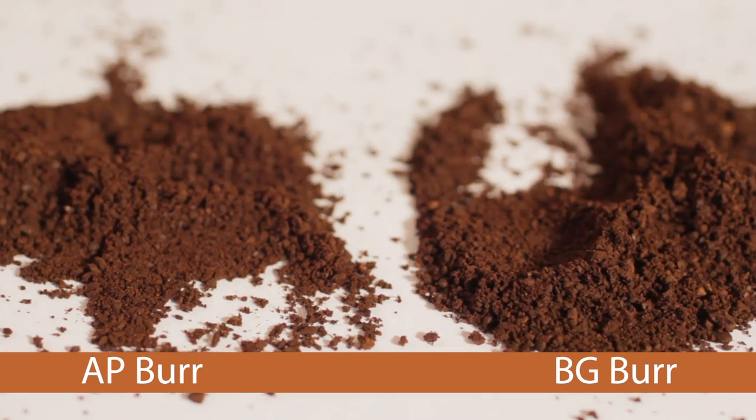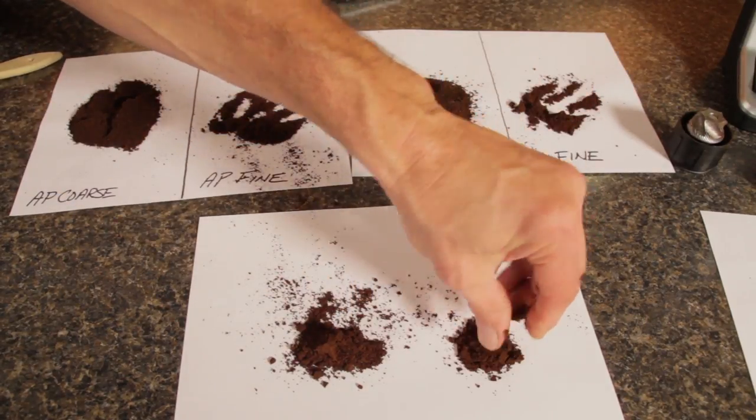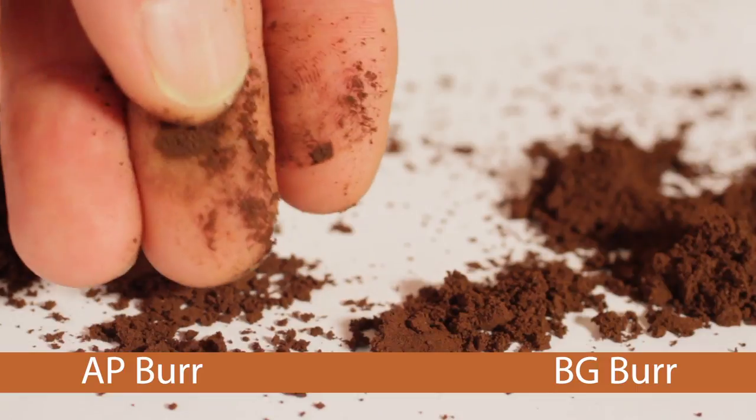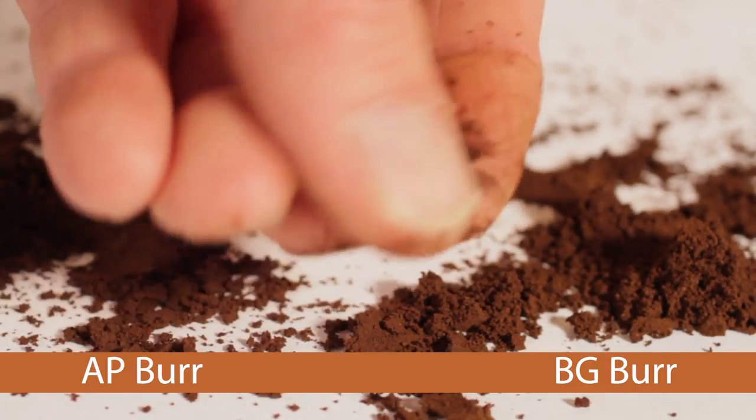On the finest settings, the AP burr produced a powdery, fine grind, which feels finer and more consistent in particle size than what the BG burr produced at its finest setting.